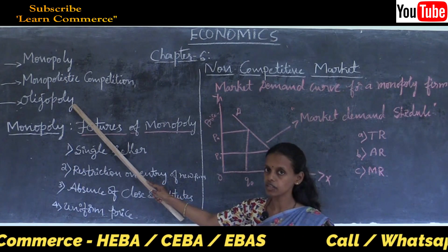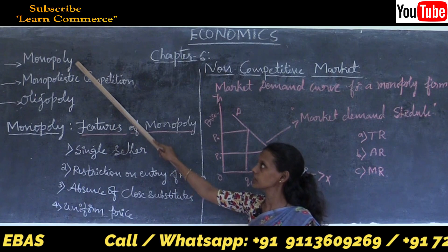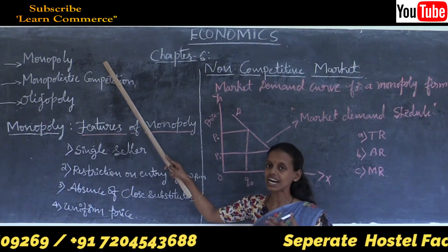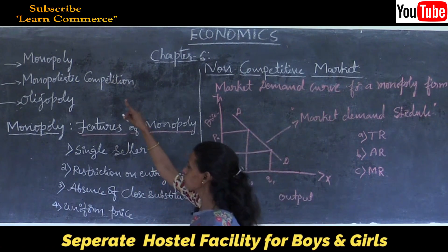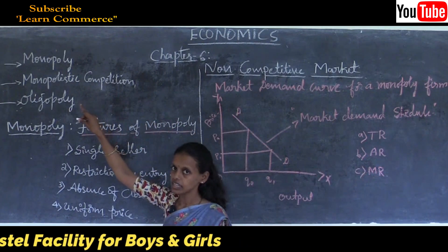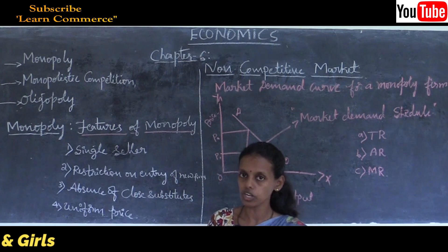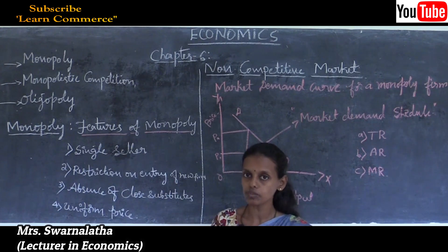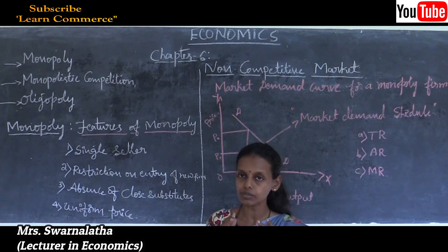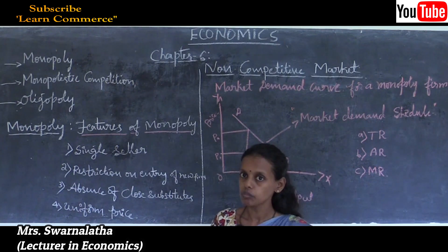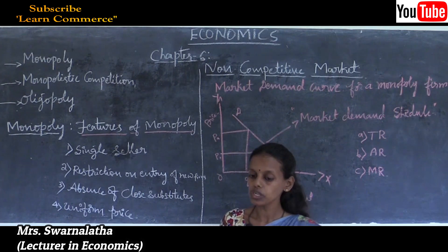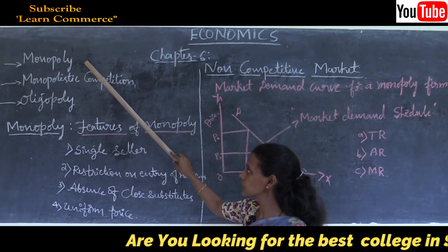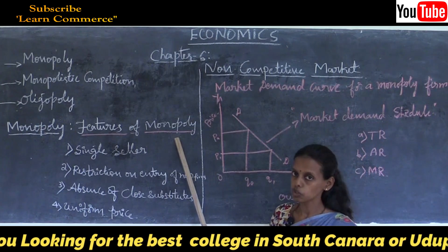First we should understand the meaning of monopoly. Monopoly - mono means single, poly means seller. So monopoly means a single seller who commands the market. He determines all market prices. The monopoly firm or entrepreneur is the main authority who decides all prices.